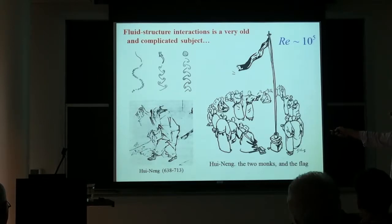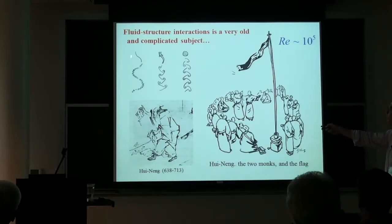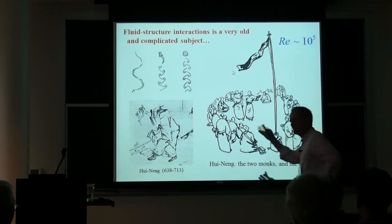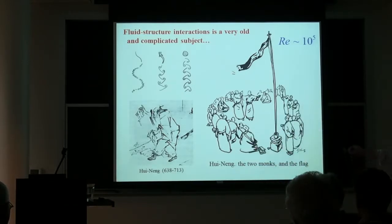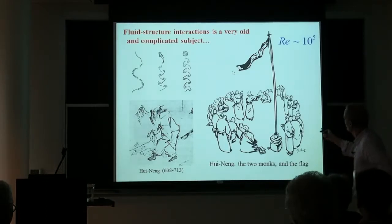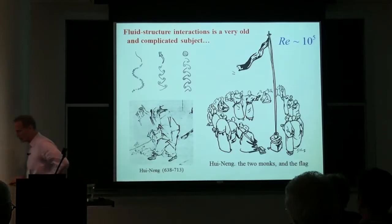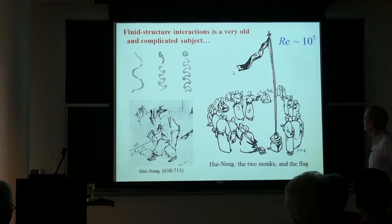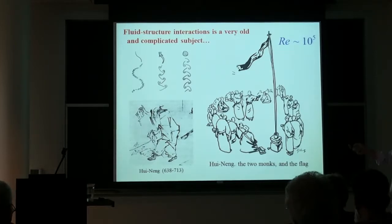Flags represent one extreme of a continuum. You can think of three examples: a fixed rigid object in flow producing a von Kármán street; a flag that's flexible but passive; and something like a fish that is active, passive, and flexible. The fish is the most difficult to comprehend. There's a very famous story known to many Asian schoolchildren concerning an itinerant Buddhist philosopher named Wegang.